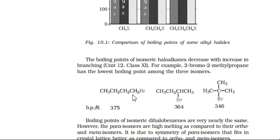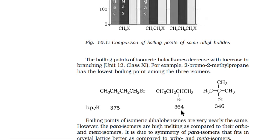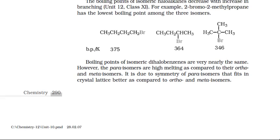Looking at the data: 1-bromobutane has no side chain, 2-bromobutane has one side chain, and 2-bromo-2-methylpropane has two side chains. As side chains increase, branching increases, the surface area between molecules decreases, intermolecular forces decrease, and boiling point lowers. Therefore, the compound with no branch has boiling point 375 K, with one branch 364 K, and with two branches 346 K.